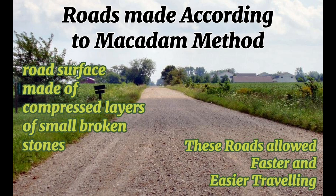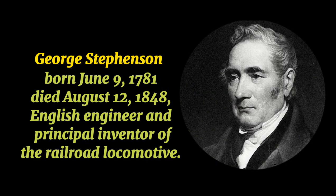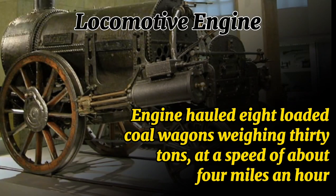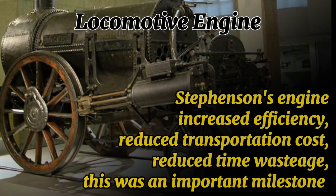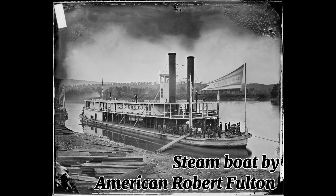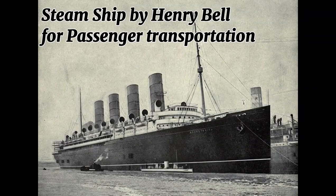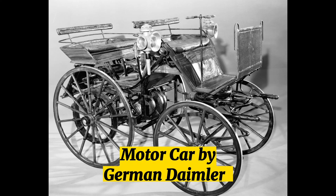John Macadam's macadamizing method of 1811 for building roads, and George Stephenson's 1814 steam locomotive transformed road and railway transport, revolutionizing movement of goods and people. Steamships and motor cars emerged, enhancing land and water transport. With the invention of various road-building methods and efficient vehicles, transportation developed and spread across all three means: land, air, and water.